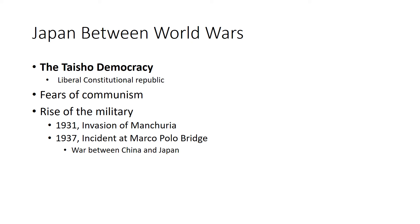The Emperor of Japan between 1912 and 1926 was Yoshihito, the son of the Meiji Emperor. He was the father of the Showa Emperor, alias Hirohito. The era in which he reigned is known as the Taisho era, so he is referred to as the Taisho Emperor. The Taisho period is 1912 to 1926.